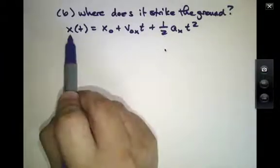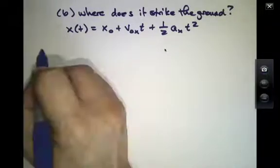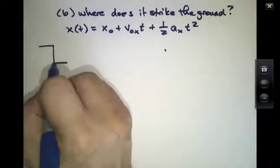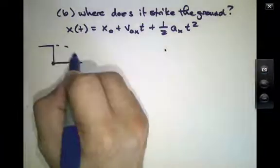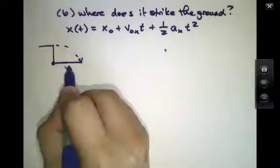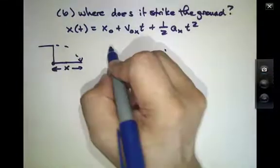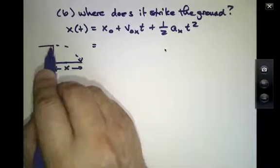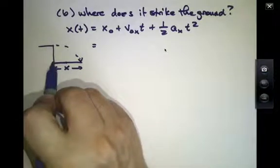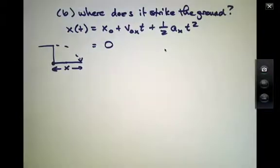This, at some later time, is the thing we would like to know. We would like to know where it strikes the ground. Remember, in our coordinate system, the origin is right here and the ball is going to land somewhere over there. The initial x, since the ball started at the table, that's quite high up in the y direction, but it's at x equals 0. So that first term is 0.